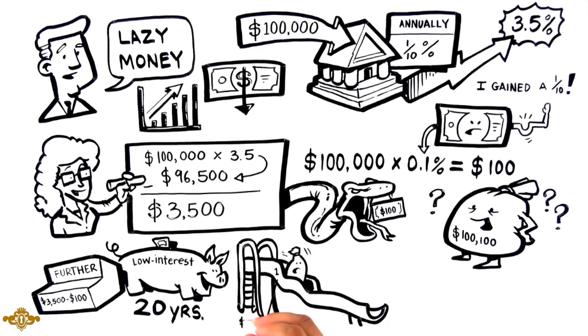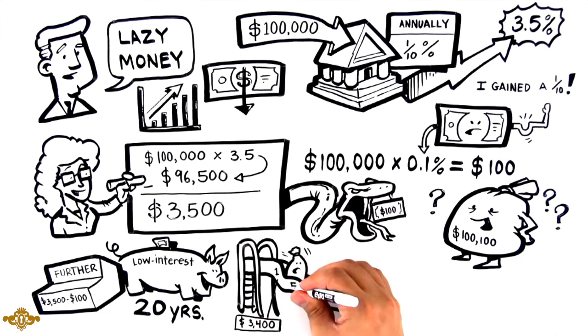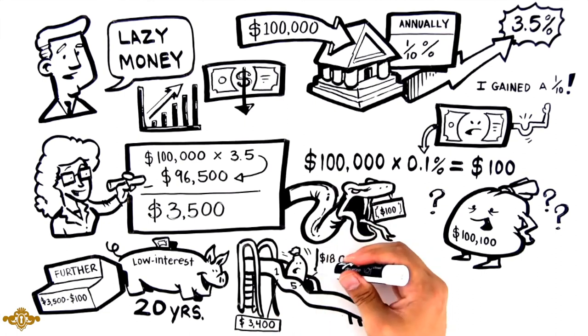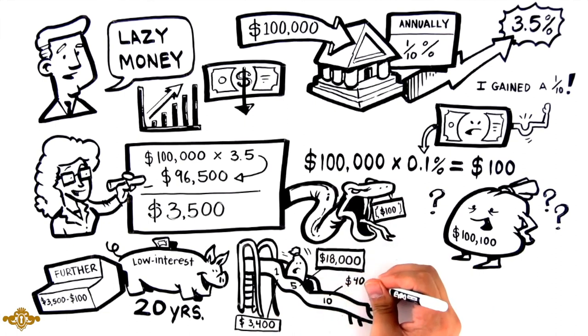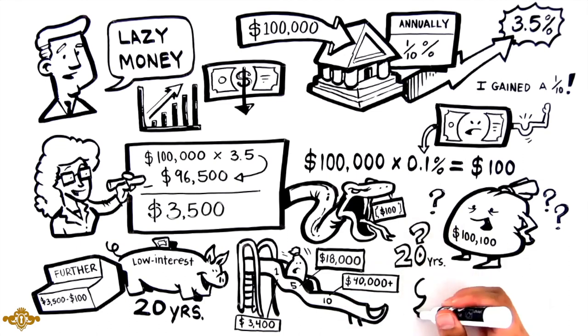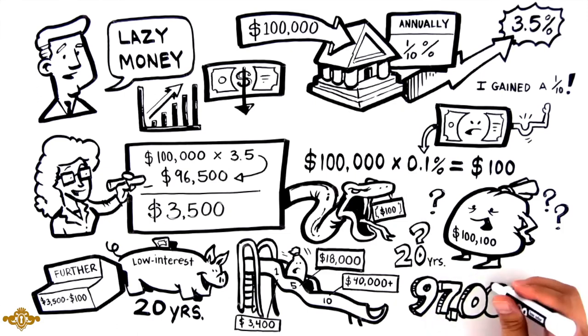At year five, the loss of purchasing power could be up to over $18,000. At the end of year 10, $40,000 plus. So, what happens at 20 years? If you can believe it, at this rate, you could be looking at a drop in purchasing power of almost $97,000.